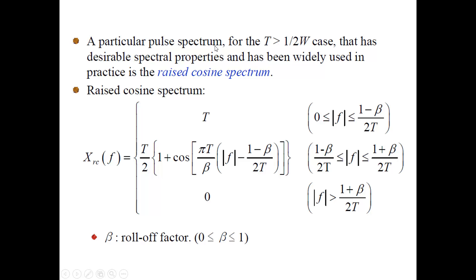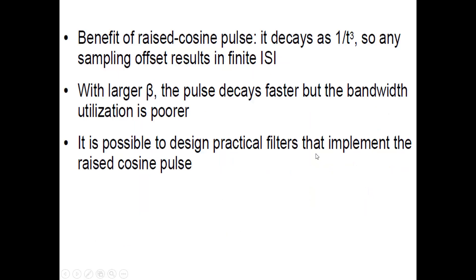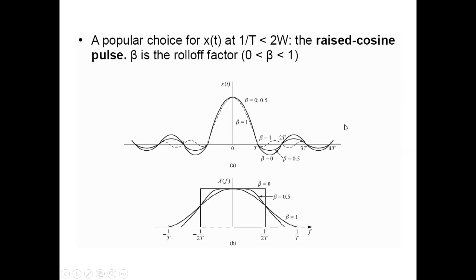A particular pulse spectrum for the overlapping case that has desirable spectral properties and is widely used in practice is the raised cosine spectrum. The raised cosine pulse is defined by a formula where β is the roll-off factor. If you design a pulse using this formula you will be able to achieve zero ISI.